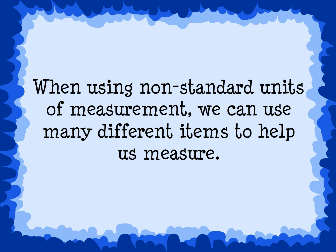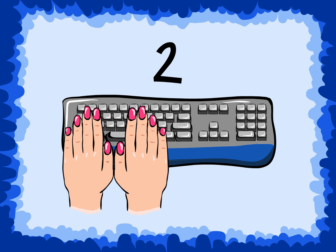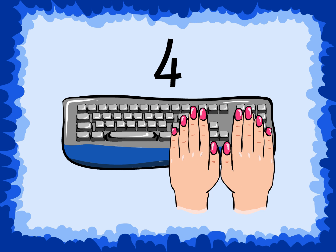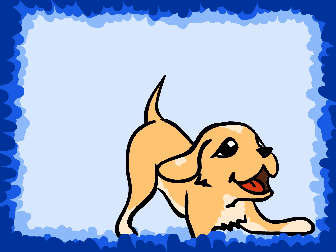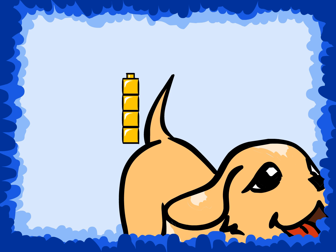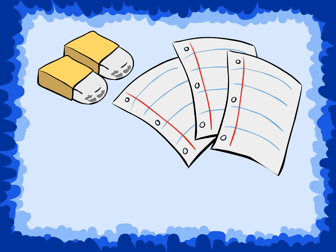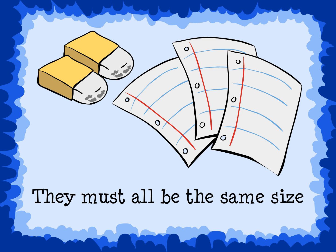When using non-standard units of measurement, we can use many different items to help us measure. We can put our hands side by side across our computer keyboard to see how many hands long it is. We can stack a row of building blocks to see how many building blocks long our dog's tail is. There are many other items — erasers, pieces of paper, and many more. The important thing to remember is that whatever group of items you use, they must all be the same size.